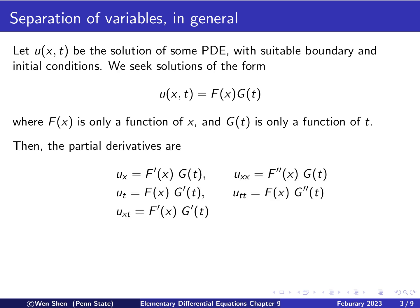If u is a product of two functions in this way, then the partial derivatives reduce to ordinary derivatives. u_x would be f prime times g, unchanged. Differentiating twice in x gives f double prime times g. The partial derivative in t gives f times g prime, and the second derivative gives f times g double prime. For mixed derivatives, differentiating in x then t gives f prime times g prime.